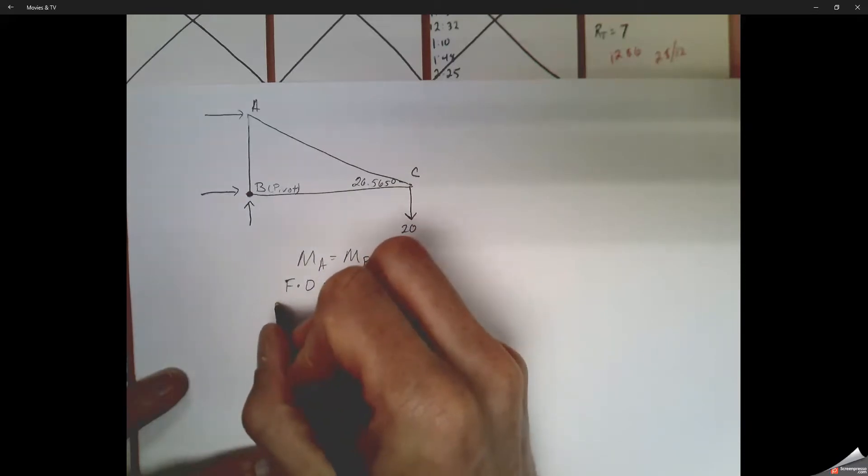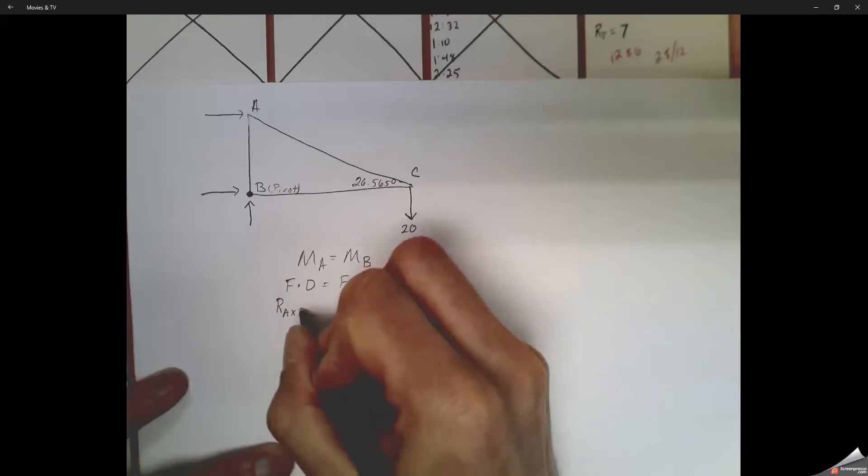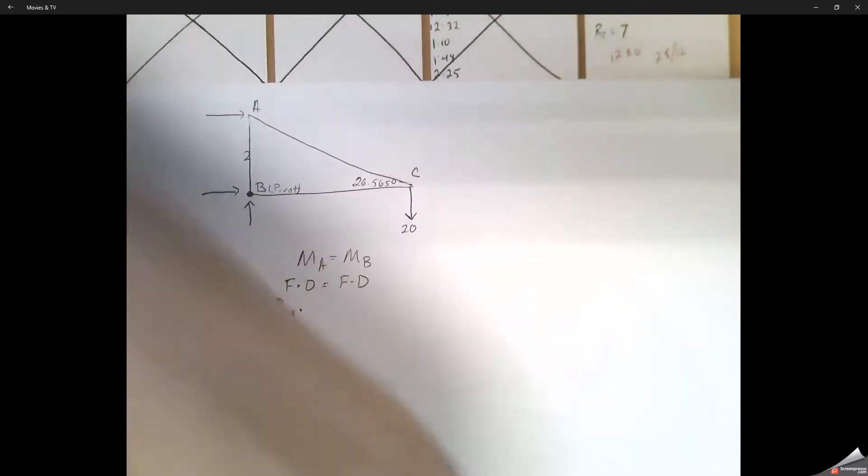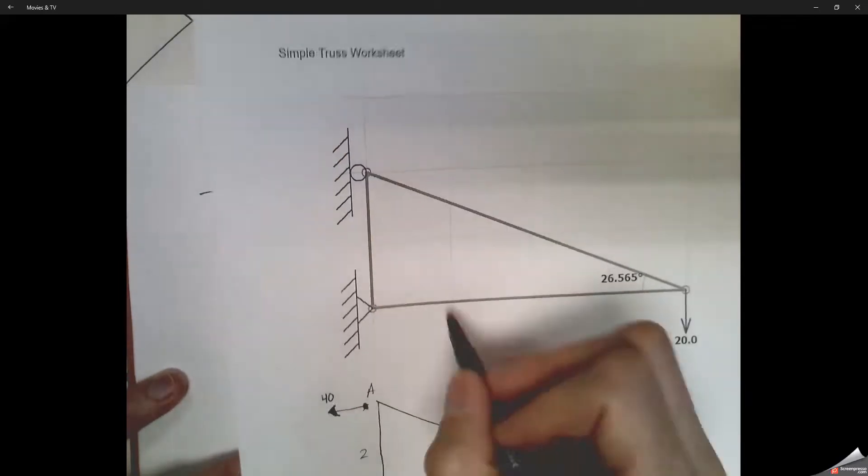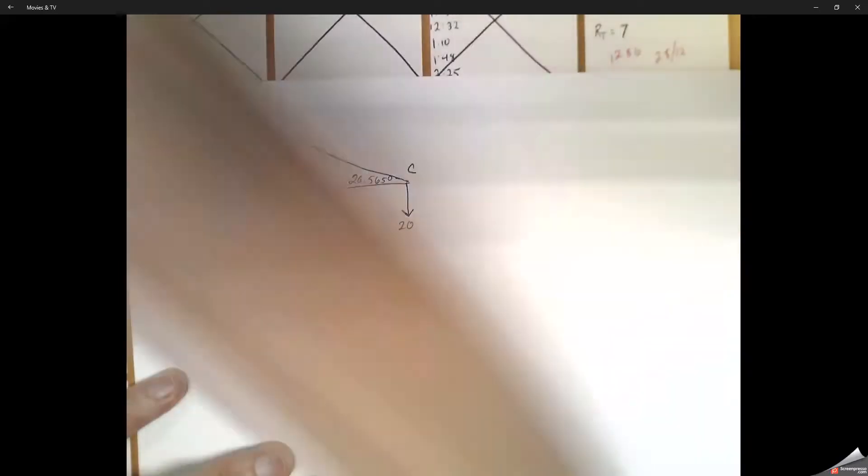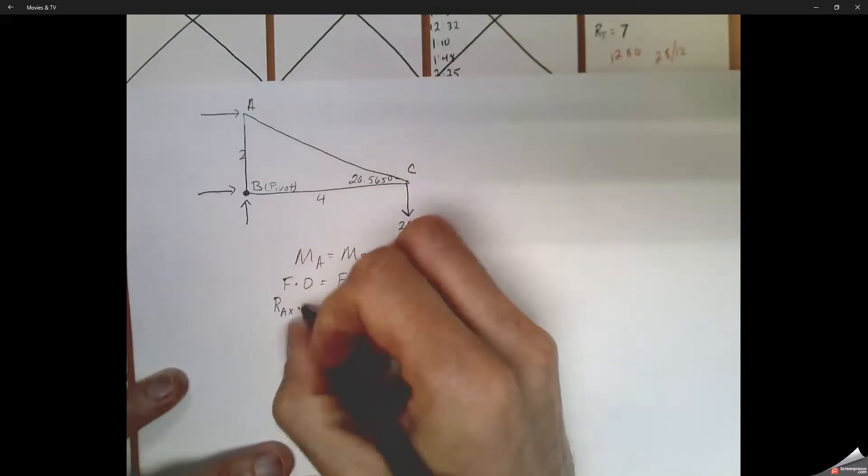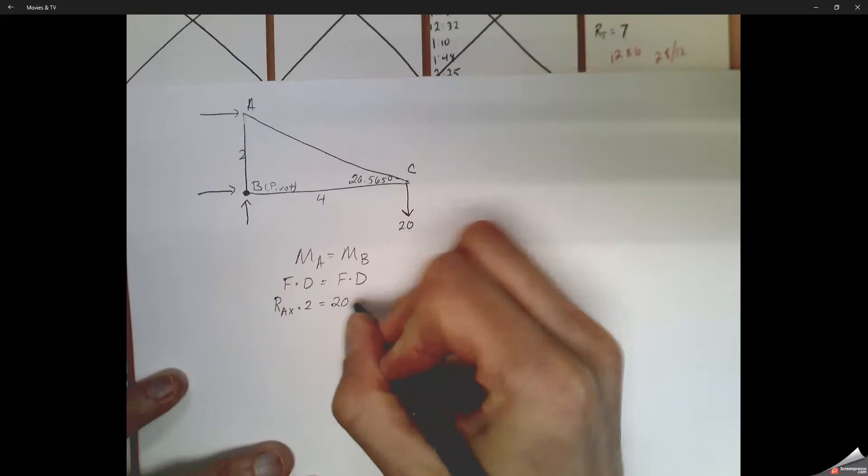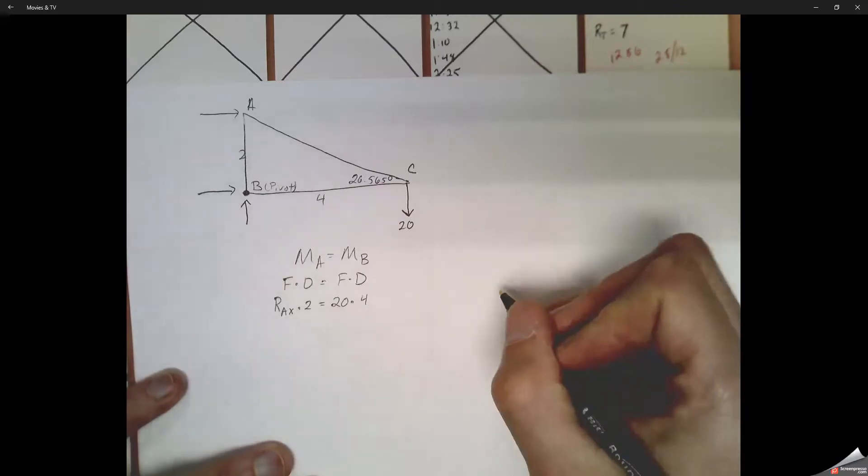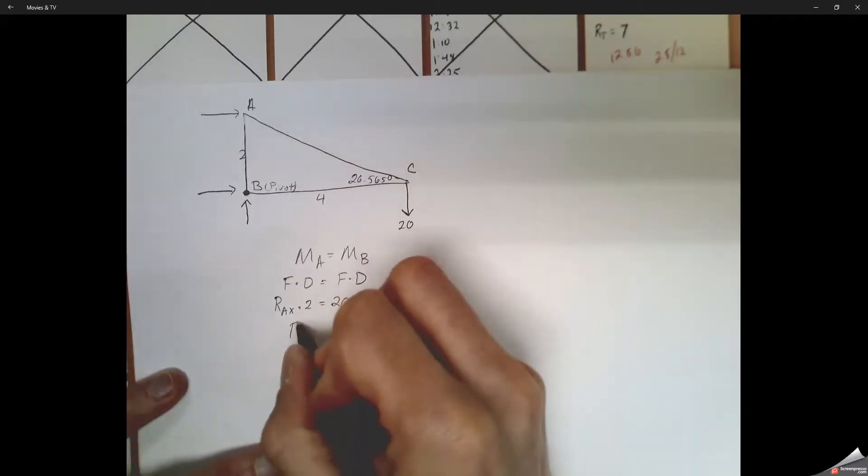So at A, our force is the reaction force at pin A in the x direction. And then from our drawing, we've got two units up. So we're going to use the distance of 2. And then we've got the distance from B to C being 4. B, C, A, all arbitrarily just named them whatever letters that work for us. More important looking at the distances.